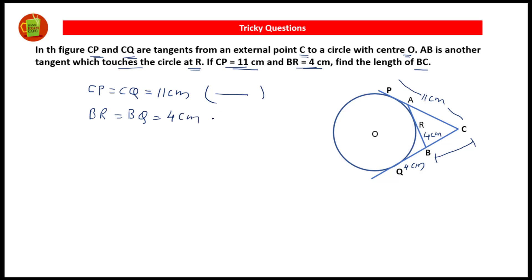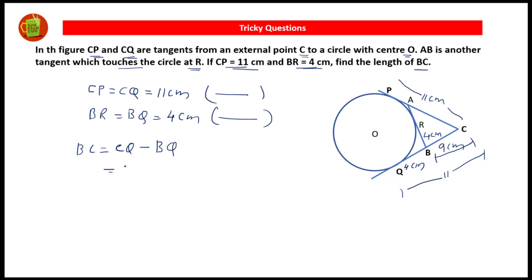BR is equal to BQ is equal to 4 centimeters — reason: tangents drawn from the exterior point. Now BQ is 4 centimeters and CQ is 11 centimeters, so 11 minus 4 gives BC, which is 7 centimeters. Therefore BC is equal to CQ minus BQ, which is 11 minus 4, equal to 7 centimeters.